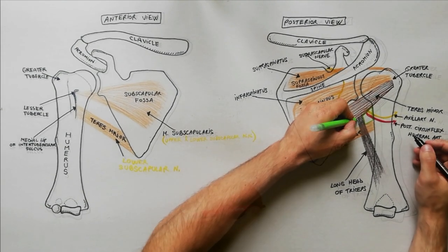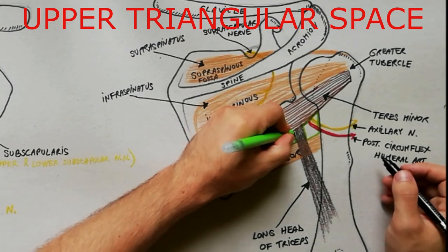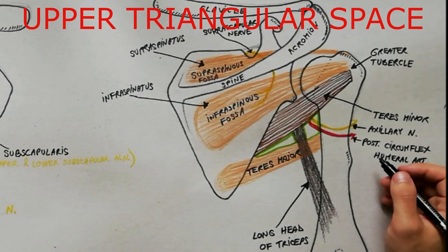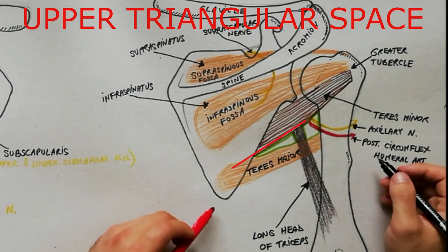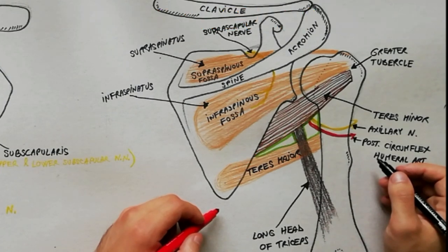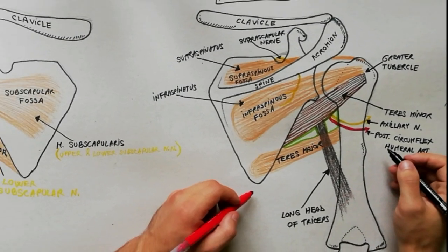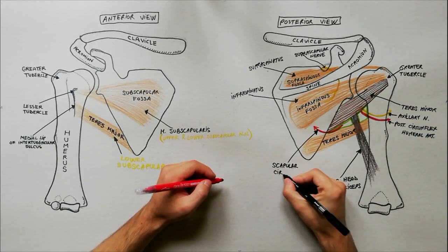The upper triangular space is bounded as follows: superiorly is the teres minor, inferiorly is the teres major, and laterally is the long head of triceps. Through this space passes the subscapular circumflex artery.